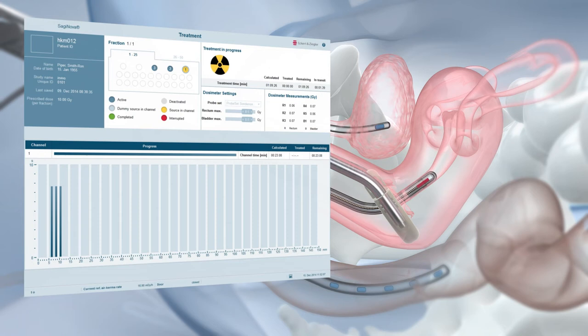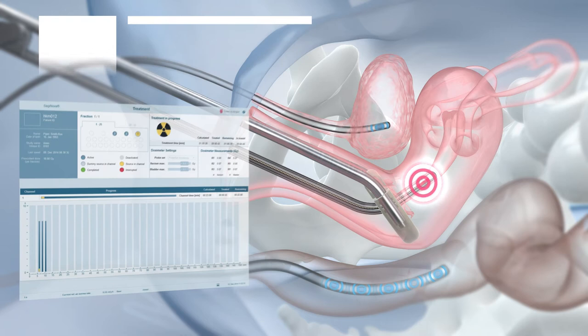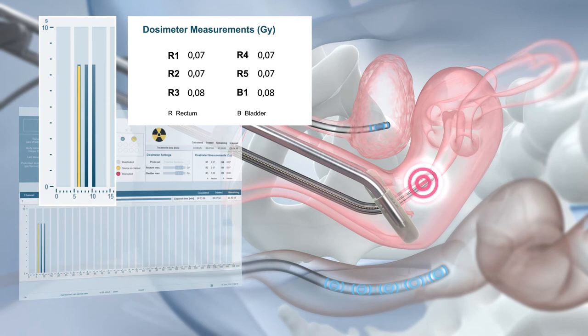The integrated in vivo dosimetry allows for real-time dose monitoring. Dose limit values can be defined via the Saginova treatment control software and warnings are displayed if bladder or rectum dose limits are exceeded. The complete data is integrated in the treatment report for convenient documentation.